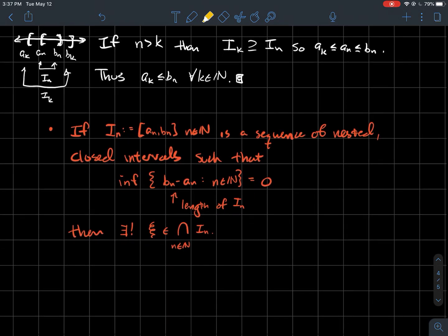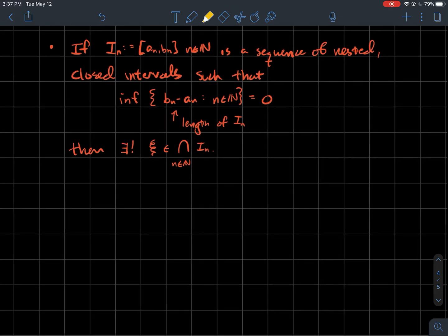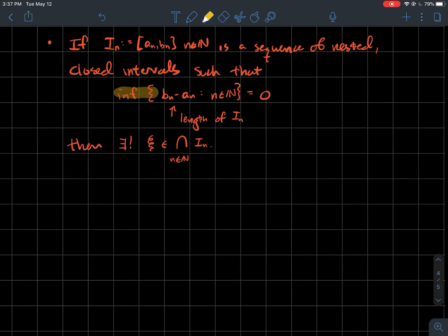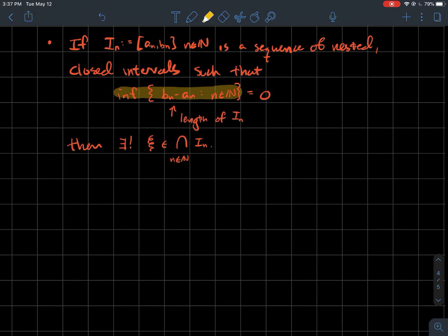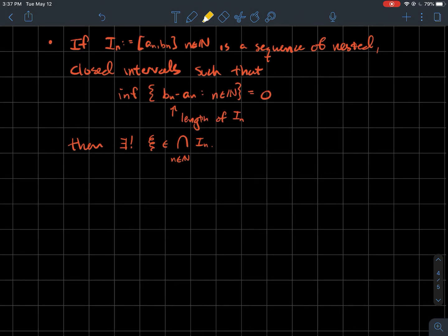Now, I just said there existed a point in common to all the nested closed intervals. How do you know if you get exactly one? One way to see if you get exactly one is if you have this extra condition that the infimum of the length of each individual interval has to be zero — so the intervals are all shrinking. Then in that case, there exists a unique point psi — that exclamation point is a symbol for unique — that's in every single one of them.